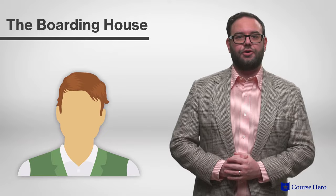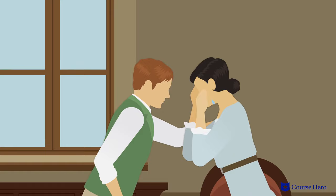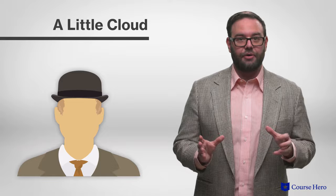In The Boarding House, a man in his 30s named Bob Doran has an affair with Polly, the much younger daughter of his landlady, Mrs. Mooney. Fearing he might lose his job and destroy Polly's reputation if word gets out, Mr. Doran reluctantly caves to Mrs. Mooney's pressure to marry Polly.